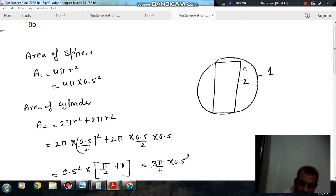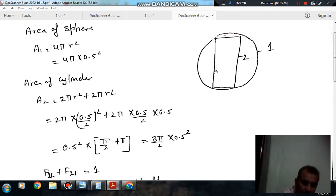So this is the cylinder and this is the sphere, and the cylinder is inside the sphere. Area of sphere: inside area of sphere is 4πr², so 4π times 0.5 squared. Area of cylinder is 2πr² plus 2πrl, that is π times (0.5/2)² times 2 plus 2π times (0.5/2) times 0.5. So that is A2.